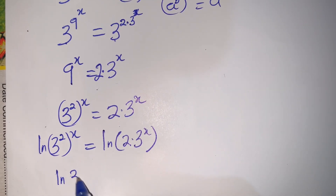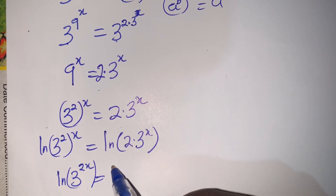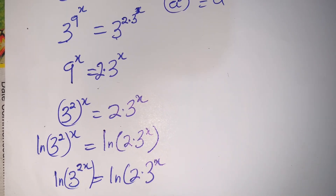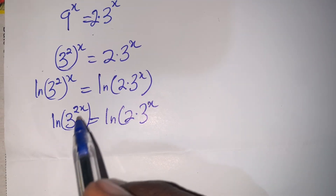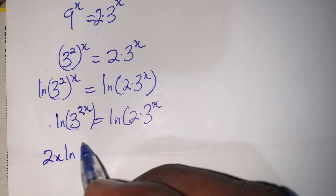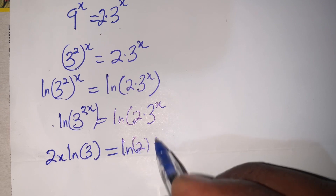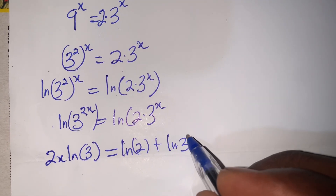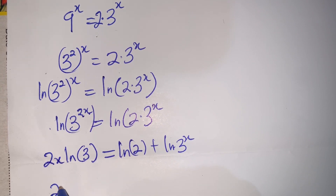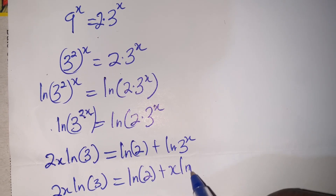This gives ln 3^(2x) on the left. Bringing the exponent down, I'll have 2x·ln 3. On the right, expanding ln(2·3^x), this equals ln 2 plus ln 3^x, so: 2x·ln 3 equals ln 2 plus x·ln 3.